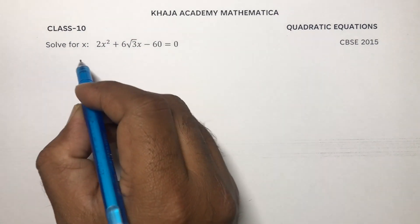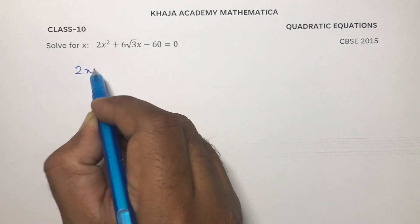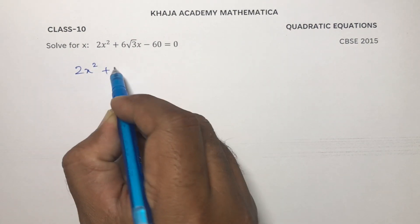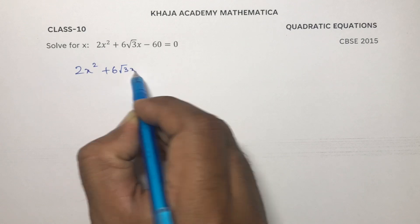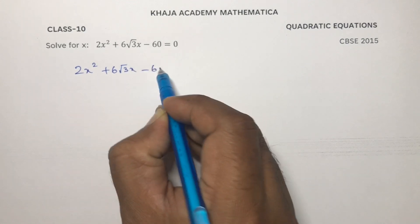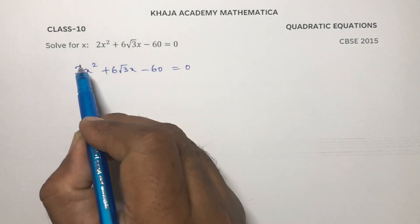Solve for x. So here, 2x squared plus 6 root 3 x minus 60 equals 0.